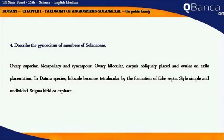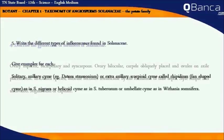Describe the gynoecium of members of Solanaceae. Ovary superior, bicarpellary, syncarpous. Ovary bilocular, carpels obliquely placed and ovules on axile placentation. In Datura species, the bilocule becomes tetralocular by the formation of false septa. Style simple and undivided. Stigma bifid and capitate.